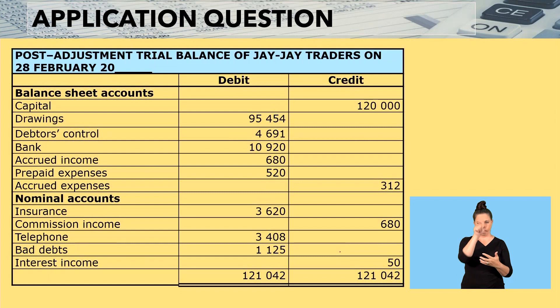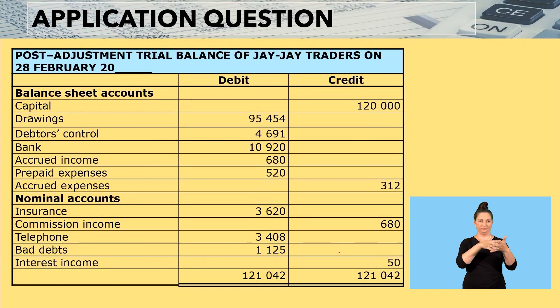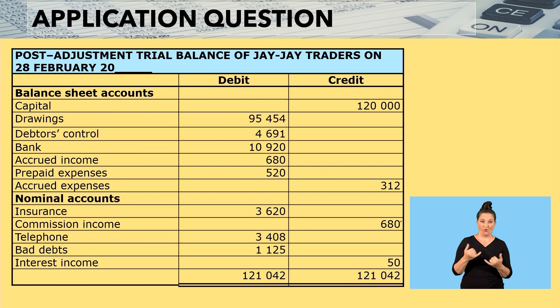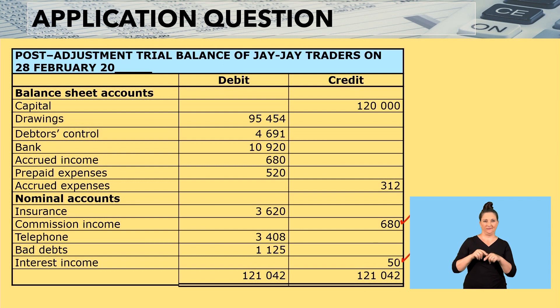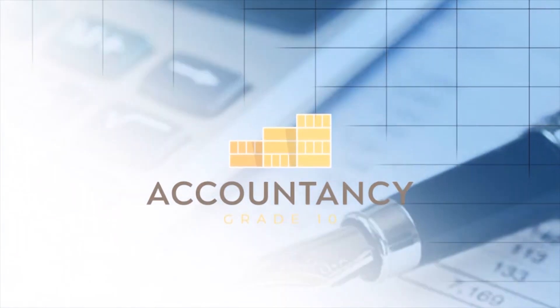After you have done your adjustments, you have the post-adjustment trial balance. You can see commission income and interest income are both recorded there. Dear learners, let's go for an air break, and I'll see you shortly. Thank you.